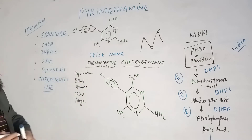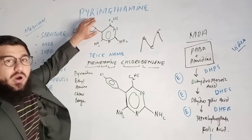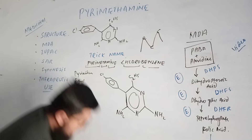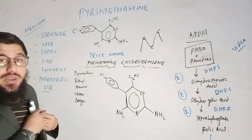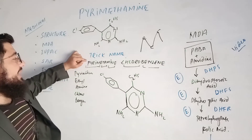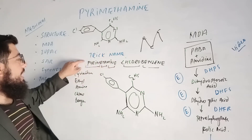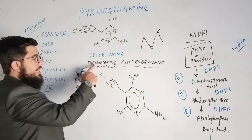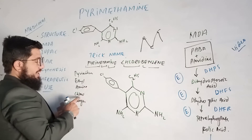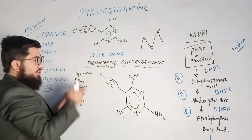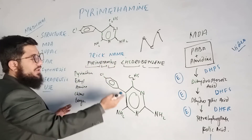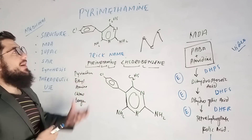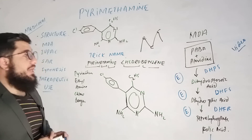So we now have the complete structure of pyrimethamine. To recap: the trick name 'paramethamine chlorobenzene' is split into pyrimidine, ethyl, amine, chloro, and benzene. Pyrimidine gives the ring, ethyl and amine give the side chain, and chlorobenzene attaches to give the final structure — which matches the actual structure of pyrimethamine.